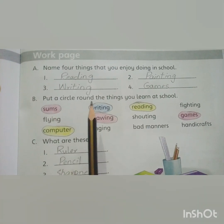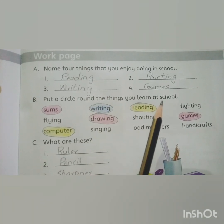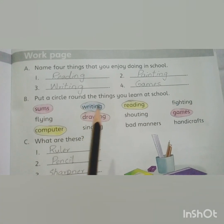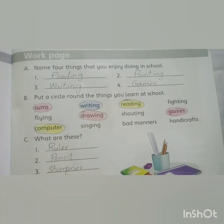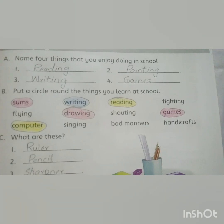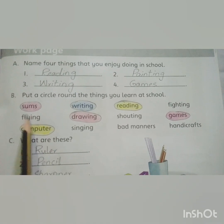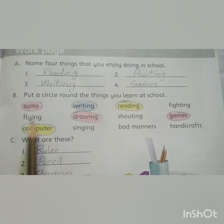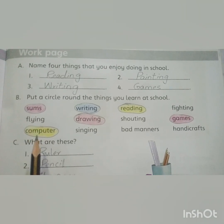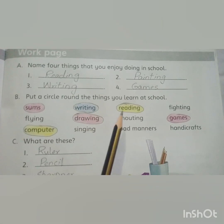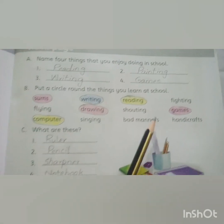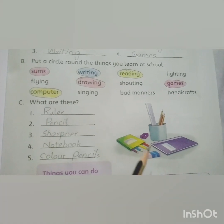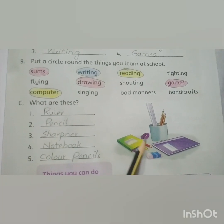Put a circle around the things you learn at school. یہاں پہ کچھ words دیے ہیں، ان میں سے آپ لوگ جو سکول میں کرتے ہیں ان کو آپ نے circle کرنا ہے، like sums, computer, writing, drawing, reading, and games. Flying کو circle نہیں کرنا۔ Next exercise: What are these? There are some pictures of different things.